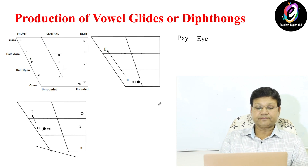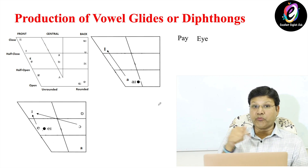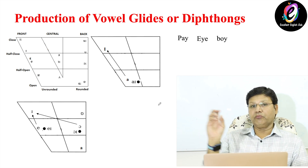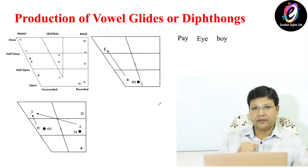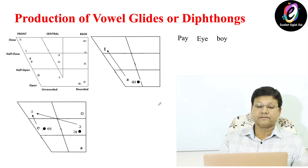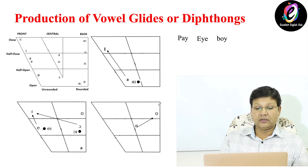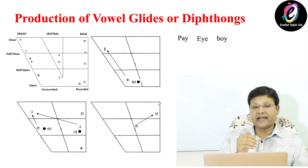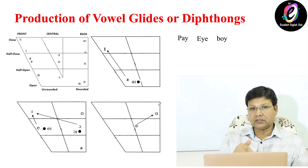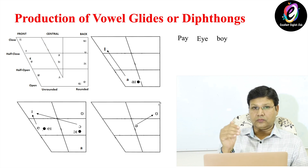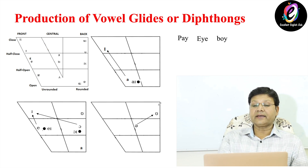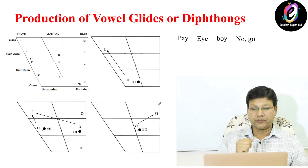The next diphthong is O-I, as in 'boy' and 'toy' — O and I together, O-I. The next diphthong glides from schwa to U. For example 'no' and 'go' — this is O-E.